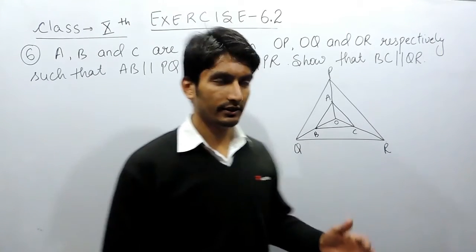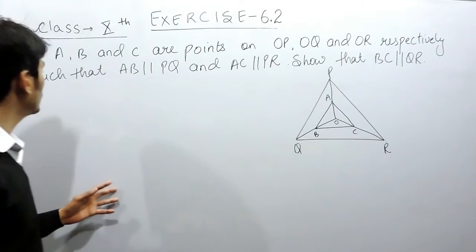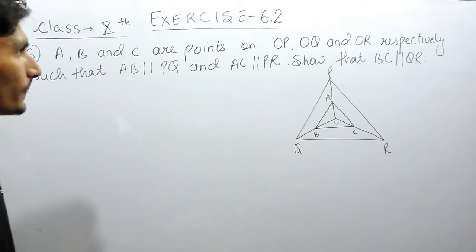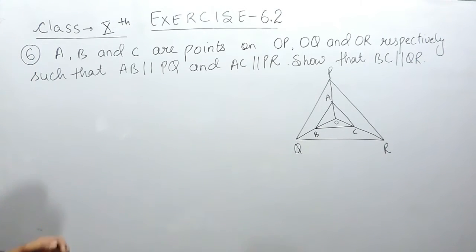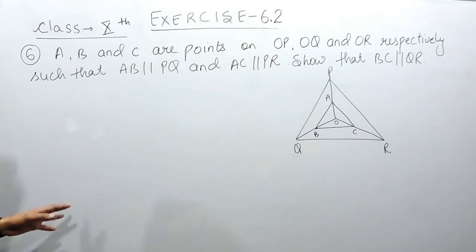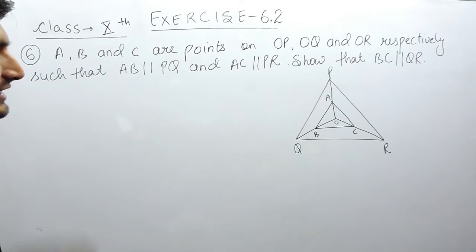Hello everyone. In this video we are going to solve question number 6 of exercise 6.2. The question says ABC are the points on OP, OQ and OR respectively such that AB is parallel to PQ and AC is parallel to PR.